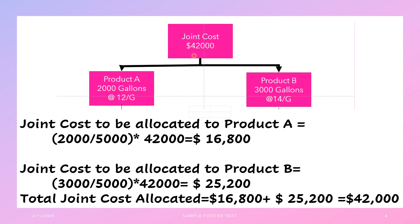The total joint cost is $42,000. Product A is 2,000 gallons and product B is 3,000 gallons. The joint cost allocated to product A equals 2,000 divided by the total of 2,000 plus 3,000, which is 5,000, multiplied by $42,000. That gives you $16,800 for product A.